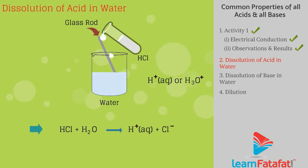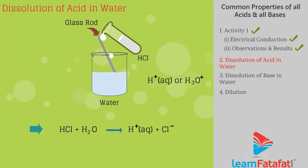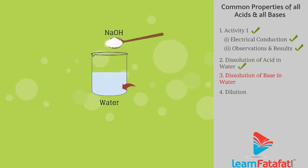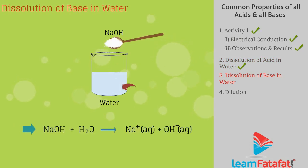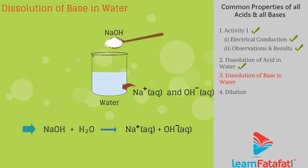HCl + H2O gives H+ + Cl-. When a base is dissolved in water, it produces OH- ions. NaOH + H2O gives Na+ + OH-.